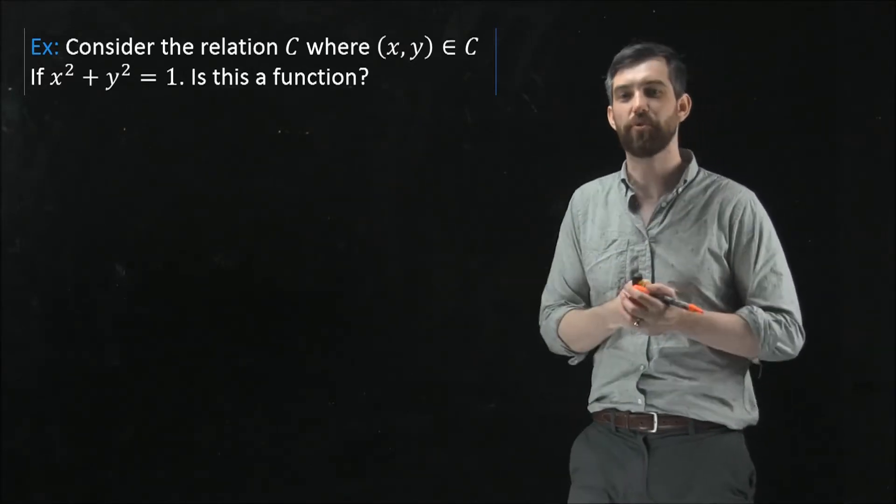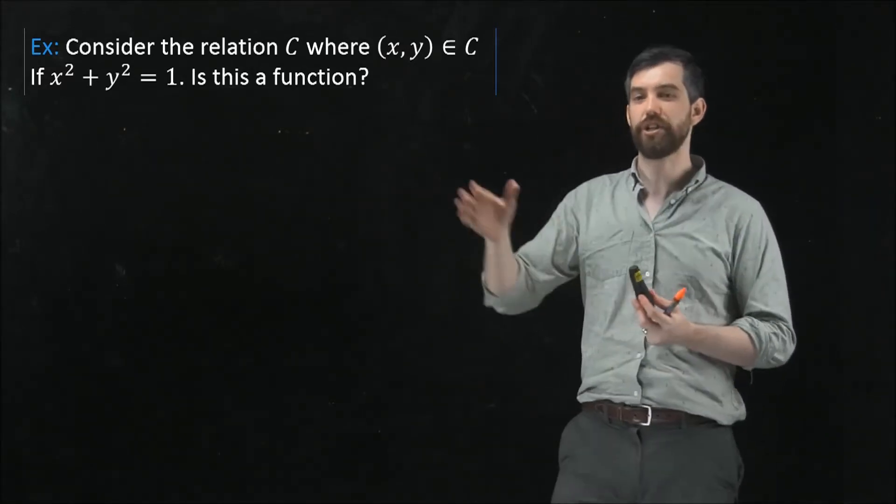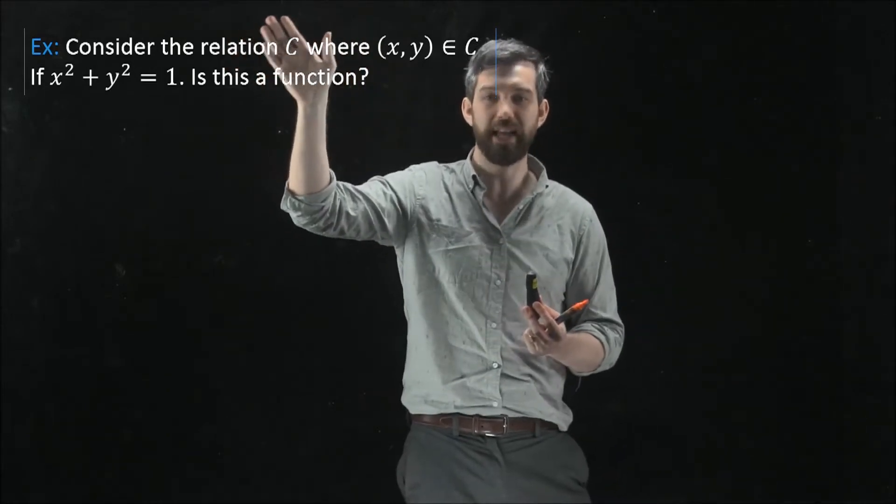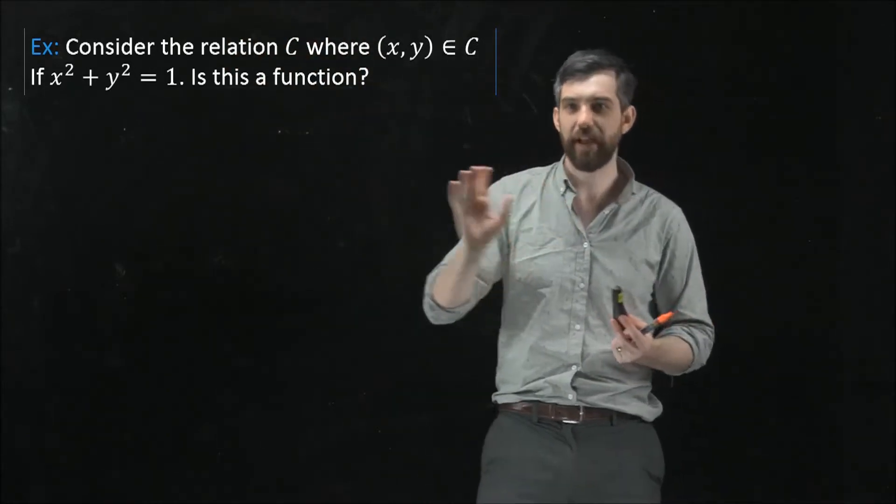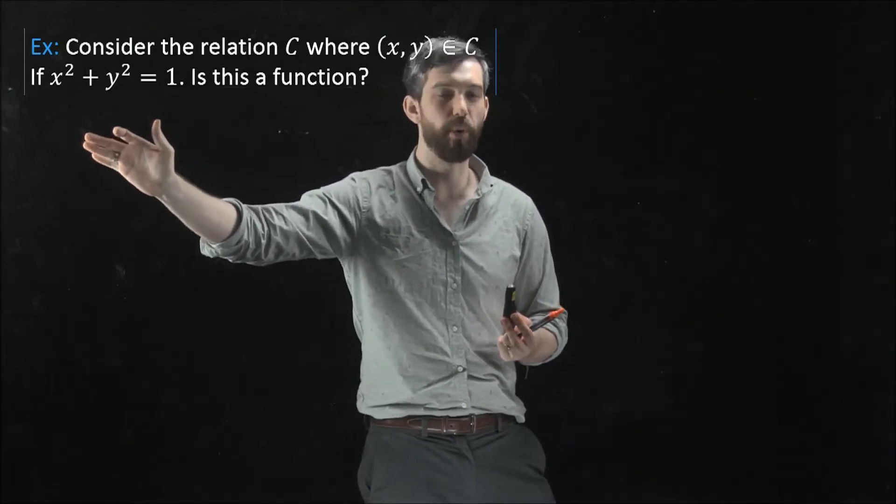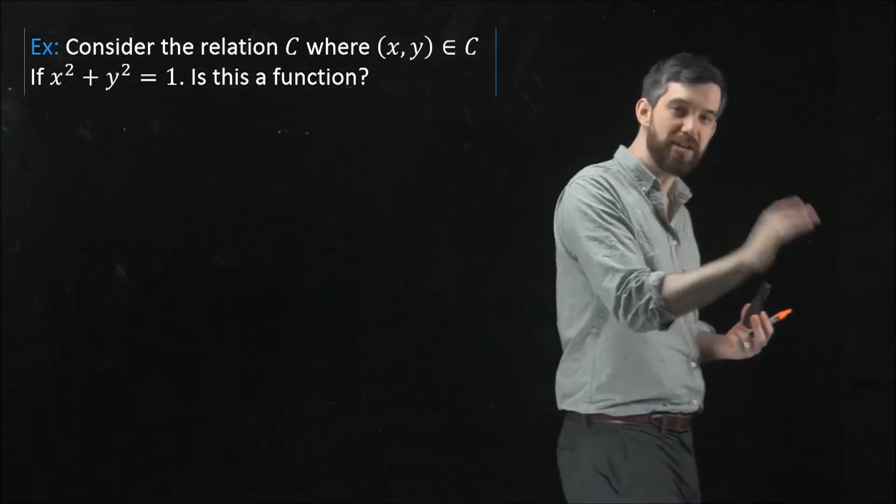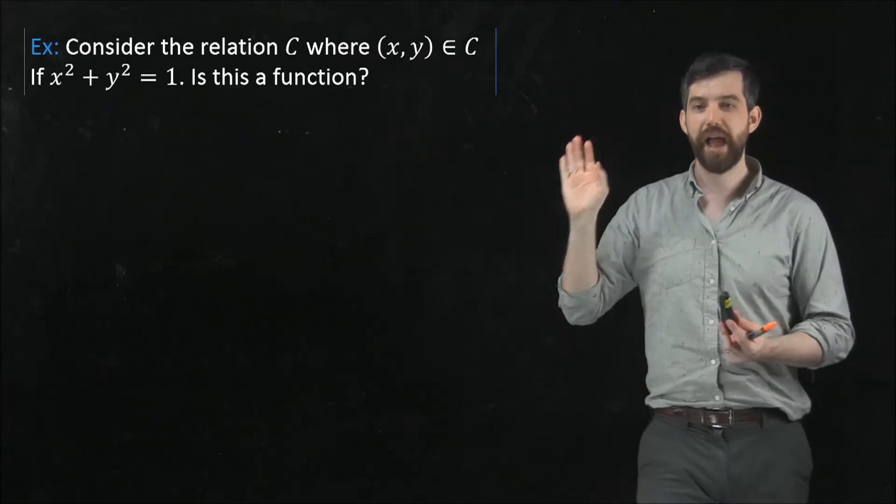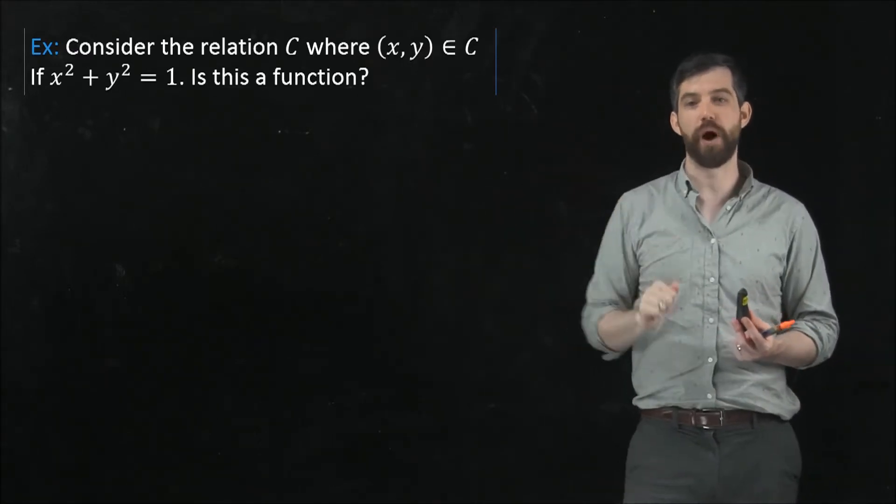We'll see why it's a circle relation in a moment. So I have this relation and it has the defining property that x squared plus y squared is equal to 1. So x is related to y if x squared plus y squared is equal to 1.